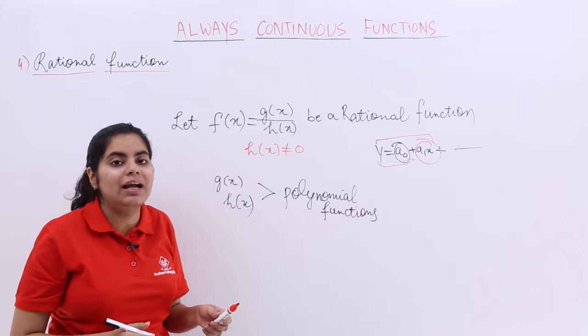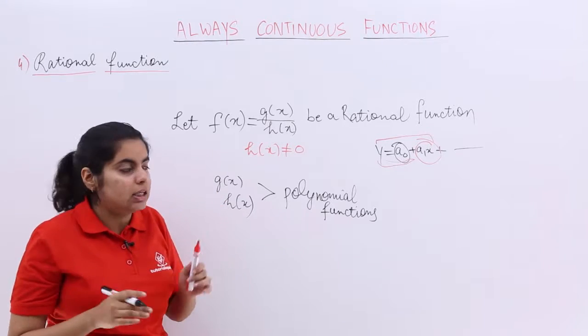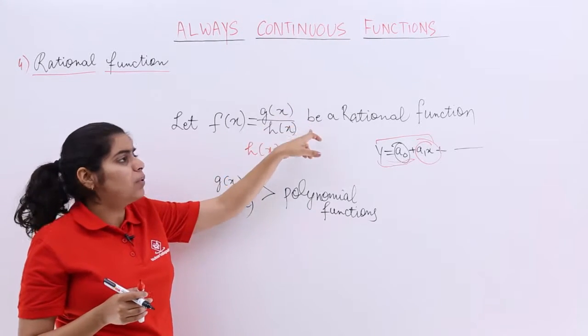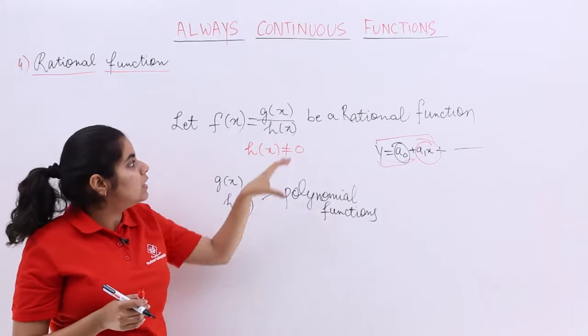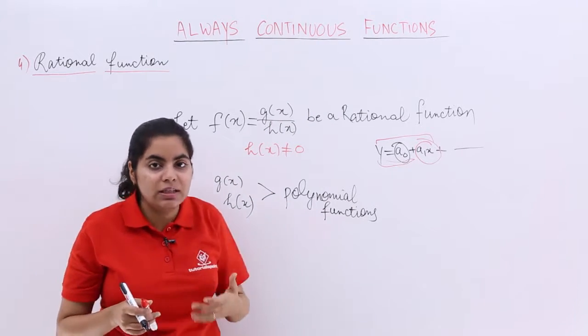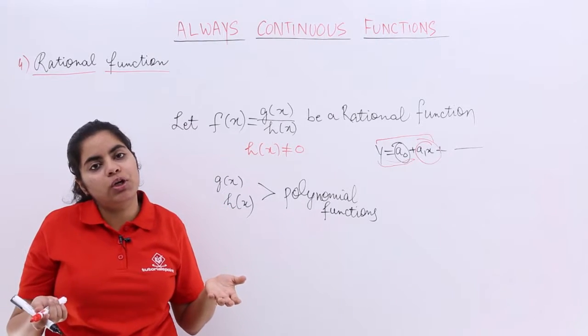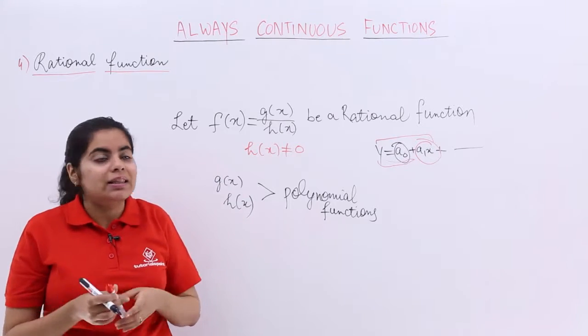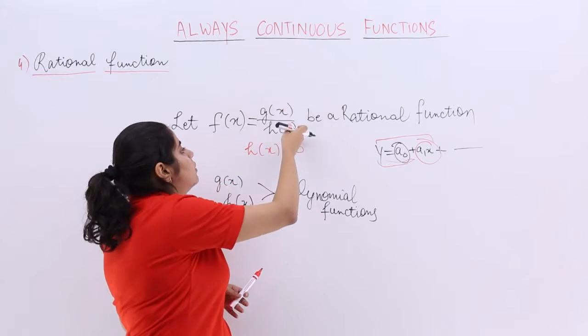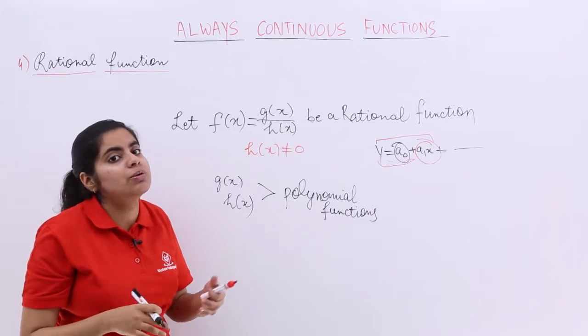They both should lie in the category of polynomial functions, right? So basically, g(x) upon h(x) is there, and both g(x) and h(x) should be polynomial functions. If this is the case, that both g(x) and h(x) are polynomial functions, what does that mean? That means their division should also give me something continuous.